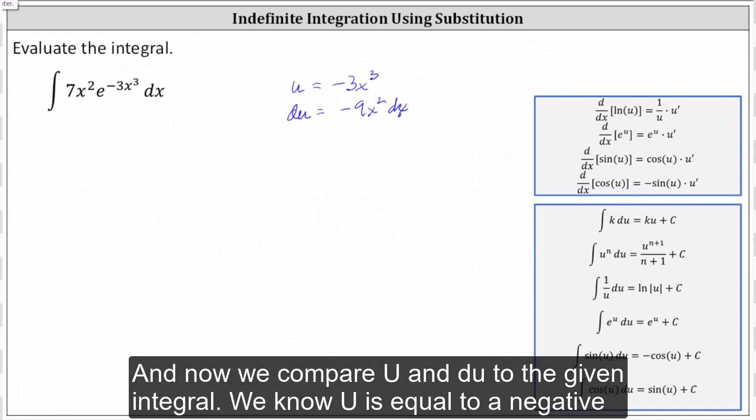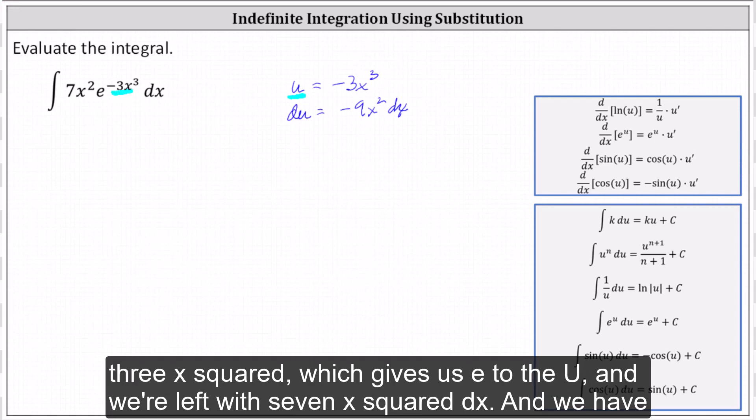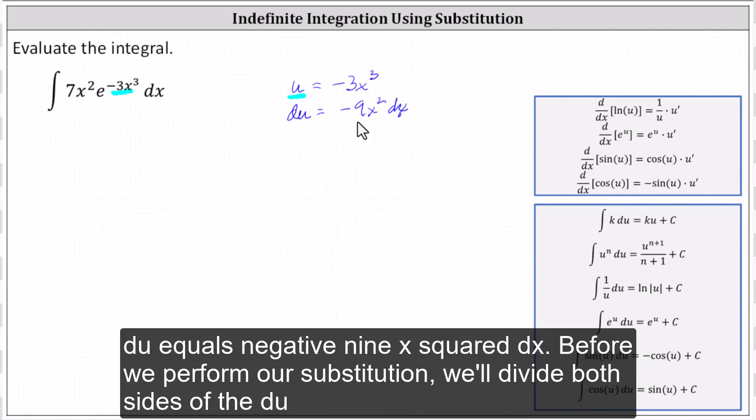We know u is equal to -3x³, which gives us e to the u, and we're left with 7x²dx. And we have du equals -9x²dx.